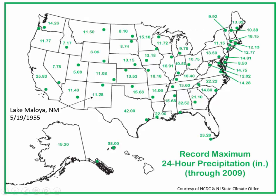What about precipitation? The record maximum daily precipitation in New Mexico was in 1955 at Lake Maloia, up near Raton — it had 11 inches of rain in one day. Most of the records in other areas are from tropical systems like hurricanes. We had a very wet year in 1955.